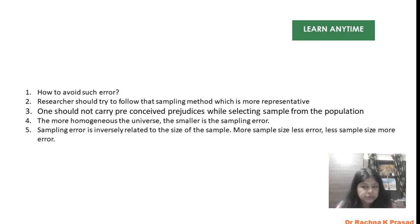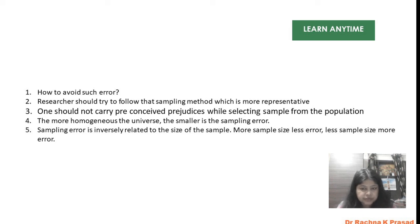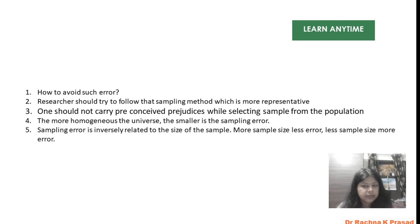In your written answer, first tell what sampling is — define it — and then explain the different types of sampling mechanisms. Then you can discuss what sampling error is: the differences or deviations and variations between units of the population and our sample. I hope we have discussed sampling error both briefly and in detail, covering all the things discussed in class.